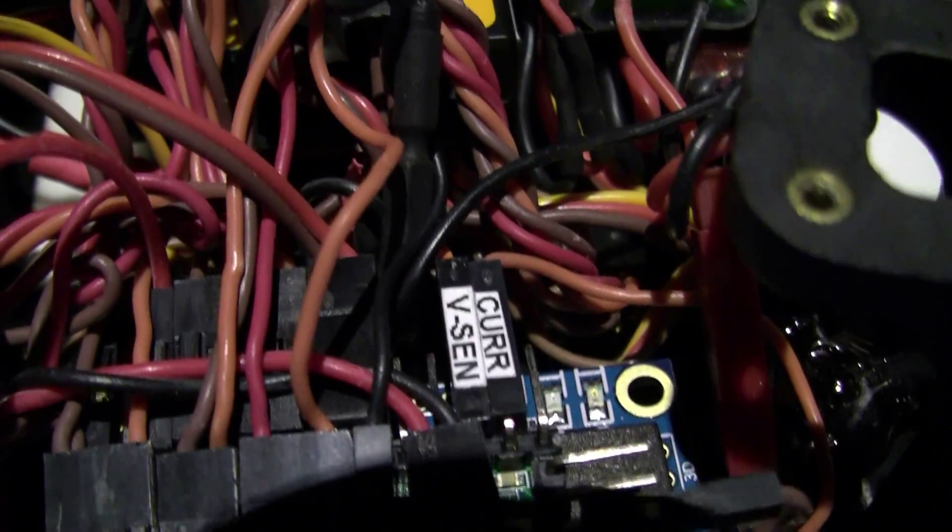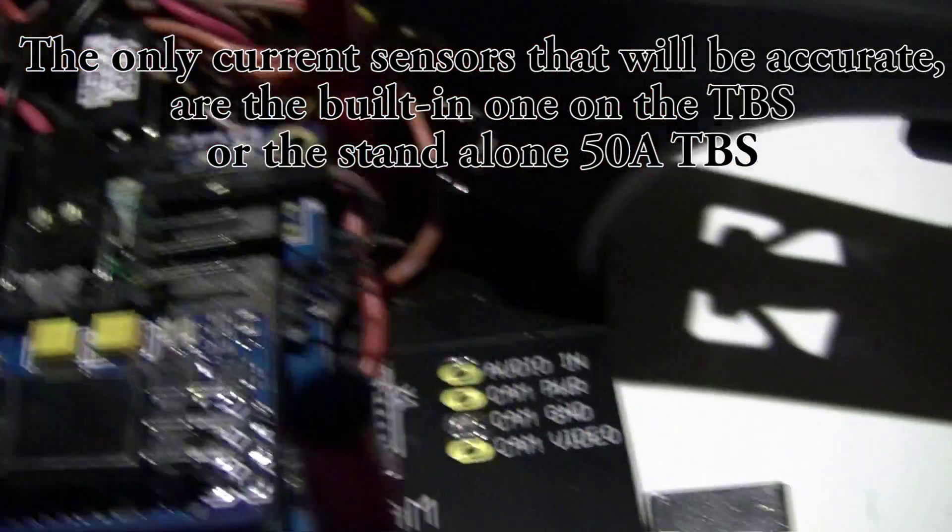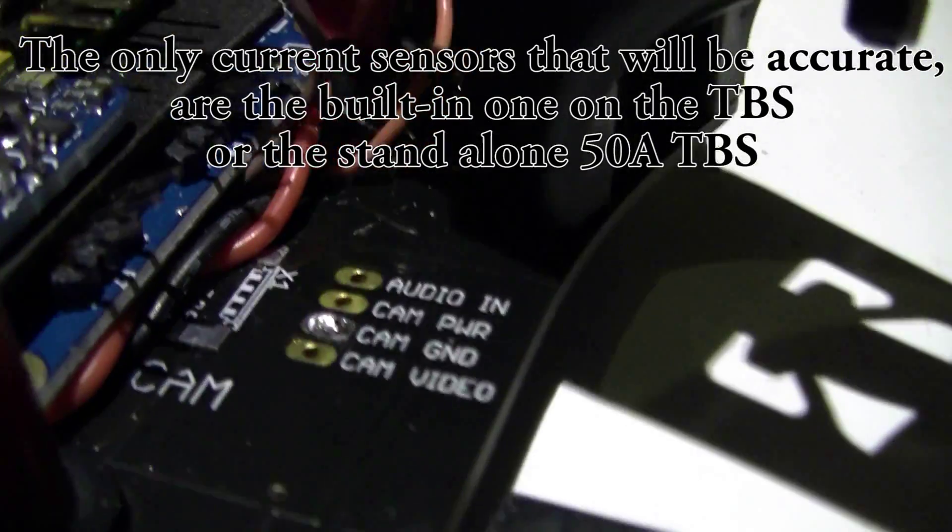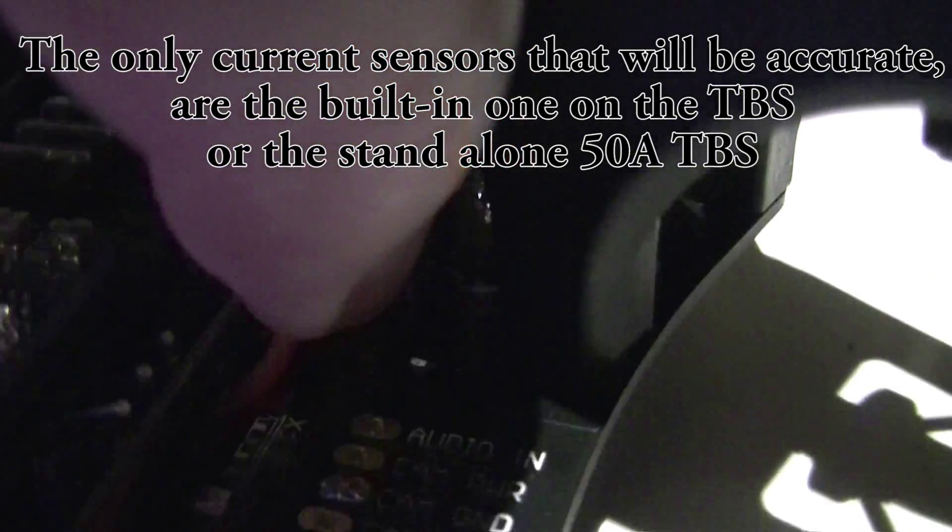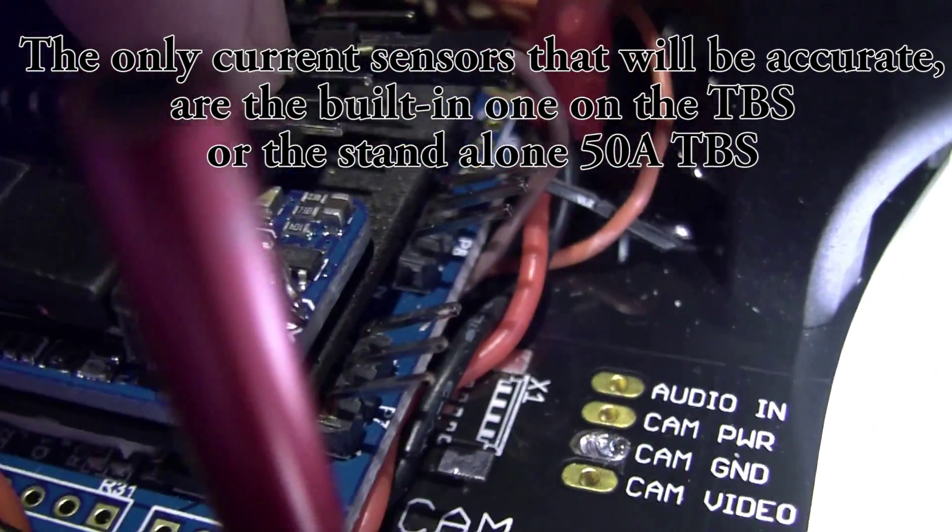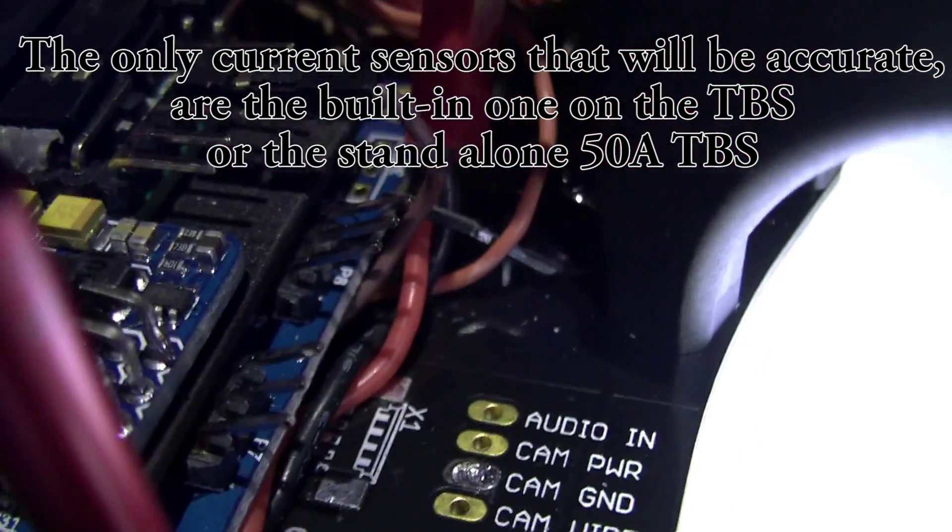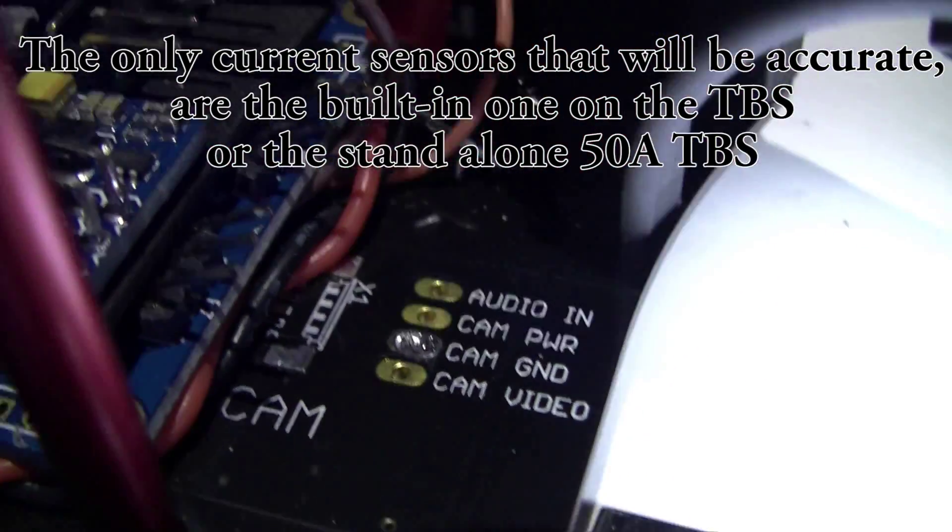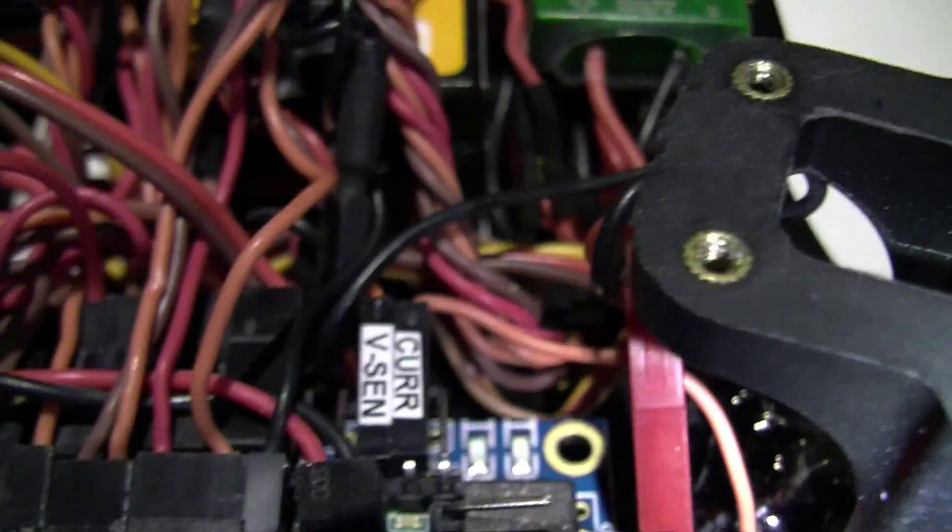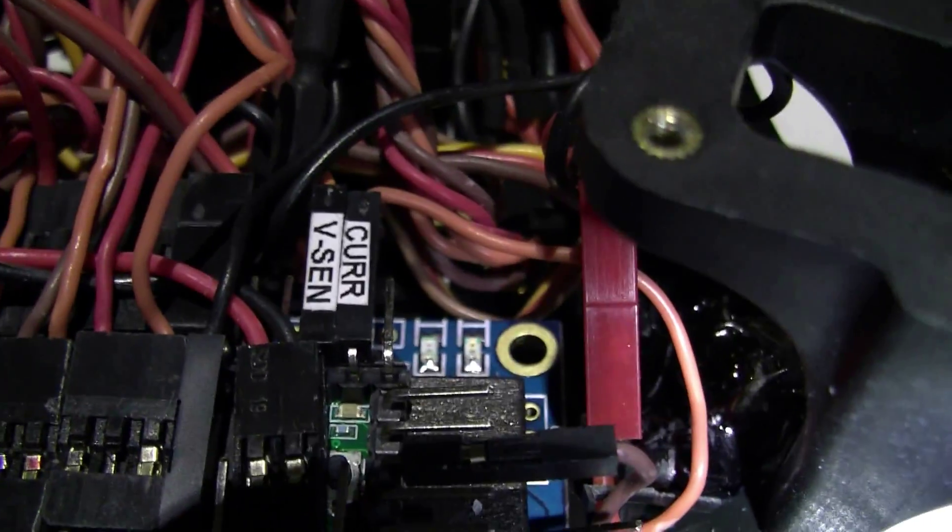And the current sensor, basically off the TBS, you can't see it but the wire goes underneath there and it actually goes to the point that's got a current sensor on the actual TBS. So I've just taken a tap off that and plugged it directly into pin number 14.